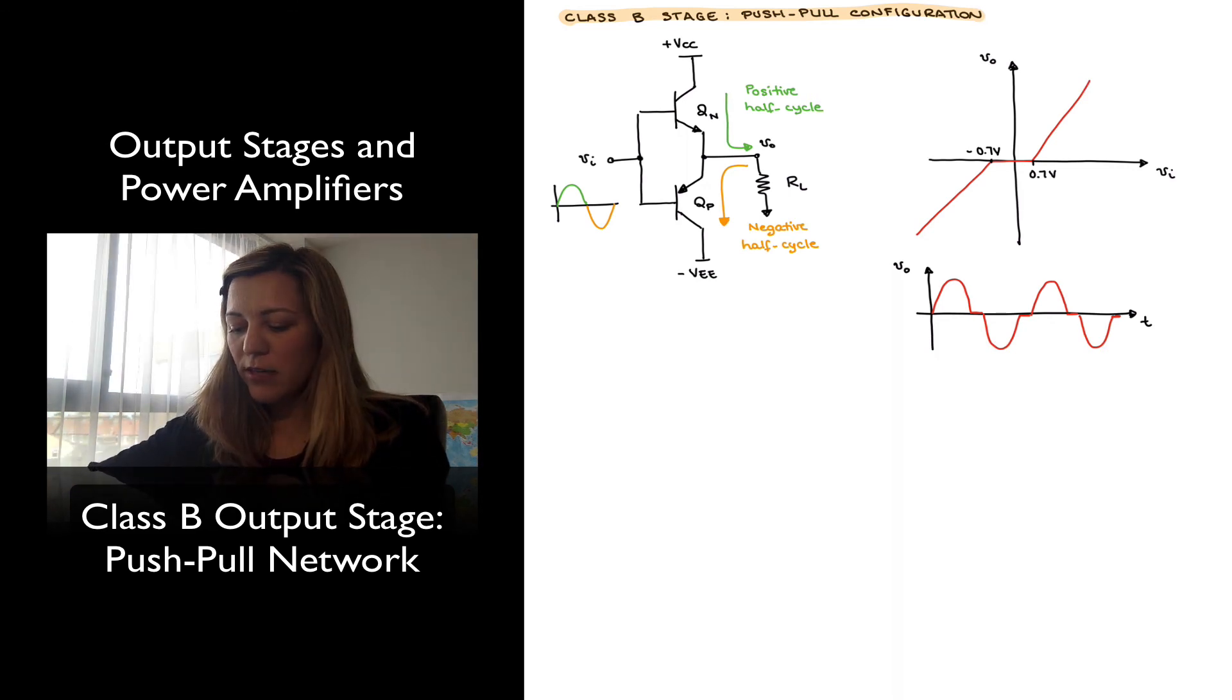Whereas during the negative half cycle the opposite thing is true. So QP is going to be conducting, because essentially you're going to have the base-emitter junction forward biased for QP. So QP will be conducting, QN will be in cut-off, and so QP essentially will be sinking the current that's coming from the load for negative signals.